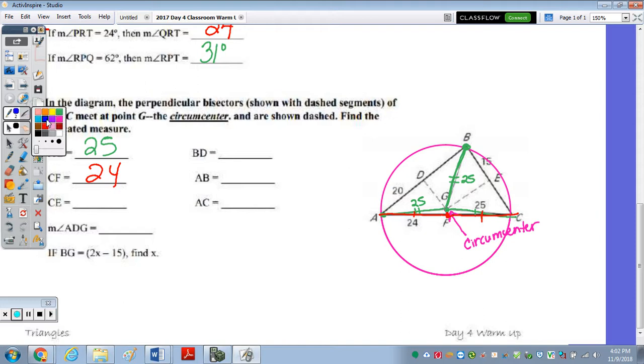Looking at CE. CE is the segment here, which is congruent to BE. So if BE is 15, CE is also 15. The length BD. Now BD is the segment here on the remaining side of the triangle, which is congruent to AD. So if AD is 20, BD is also 20.